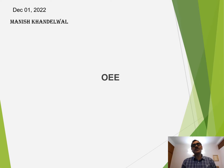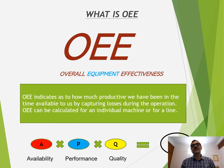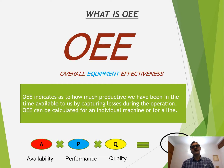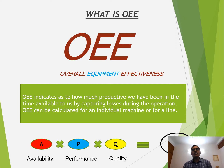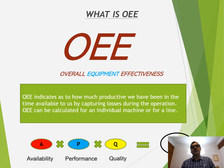This week I am making a presentation on OEE. What is OEE? Three words: Overall Equipment Effectiveness. OEE indicates how much we have been productive in the time available to us by capturing the losses.